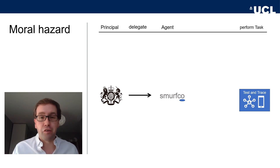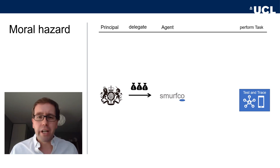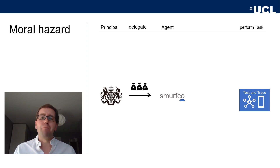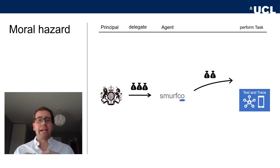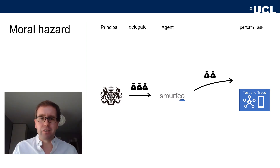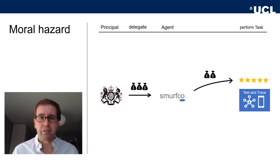Obviously the agent doesn't do this for free — the agent gets paid some money to perform this task. Now the agent has a choice: the agent can perform the task but must decide whether to expend a lot of effort, incur a lot of costs, and set up a very expensive system that performs well — a high quality test and trace system — which requires hiring qualified staff and spending a lot of money.